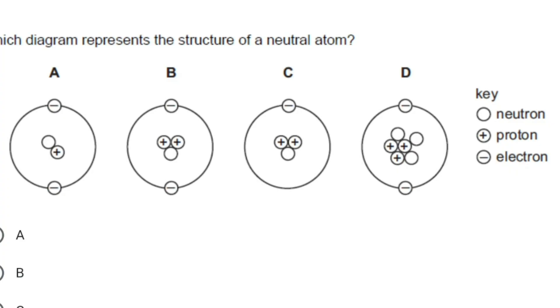Question 1 is which diagram represents the structure of a neutral atom? As you can see, there are four options. Neutral atom means positive and negative charges are equal. So the answer will be option B.